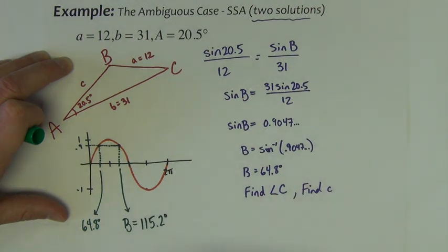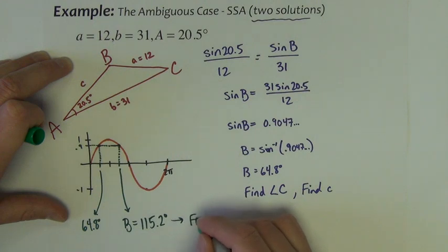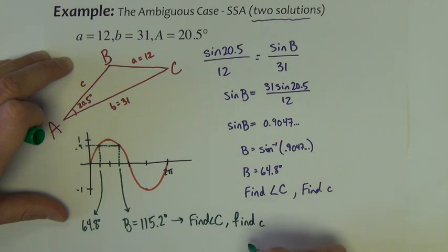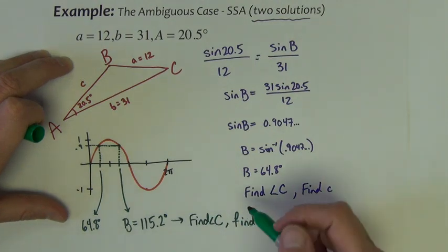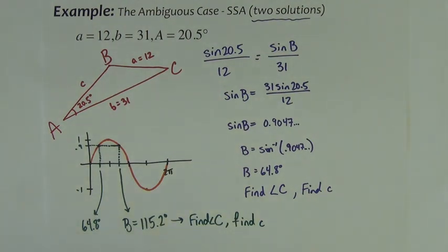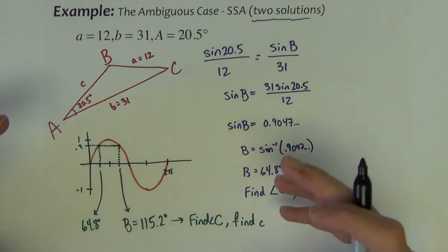It's kind of like a hidden answer. And if B could be this, well then I will find angle C and I'll find little c. So what we see is that there are actually, in a problem like this, there are two types of, two solution sets.